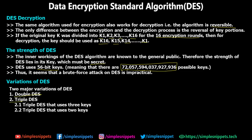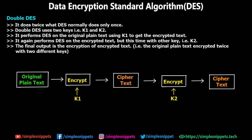To make DES even stronger, there are two major variations: double DES and triple DES. Double DES performs DES twice using two different keys, K1 and K2 (each 56 bits). First, DES is performed on the original plain text using K1 to get an intermediate cipher text, then DES is performed again using K2 to get the final cipher text — making the process twice as strong.